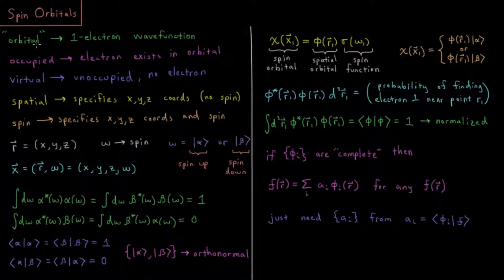When we say orbital we generally mean a one-electron wave function. This is going to be a wave function which applies to a single electron, describing where it is in space, x, y, and z, or the probabilities of where it is likely to exist, as is indicated by the term wave function.